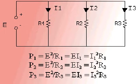And for R3, the power is equal to E squared divided by R3, which is equal to E times I3, which is equal to I3 squared times R3. For resistors in parallel, the total power dissipated is equal to the sum of the power dissipated by each resistor, or total power is equal to P1 plus P2 plus P3.